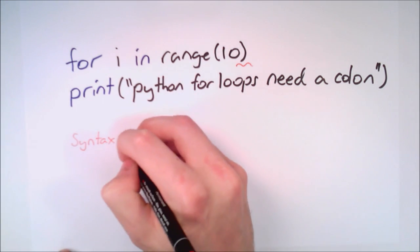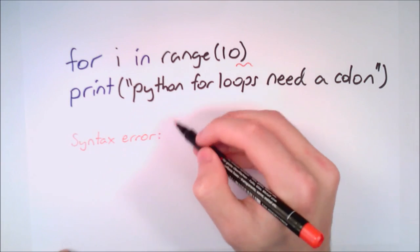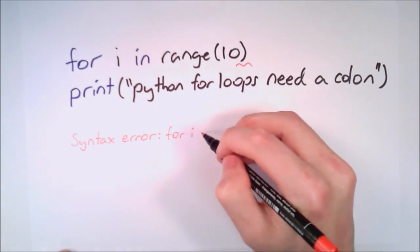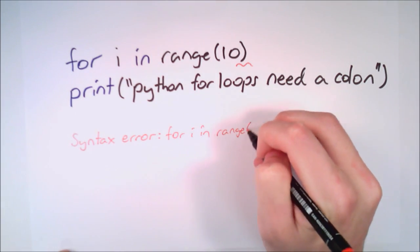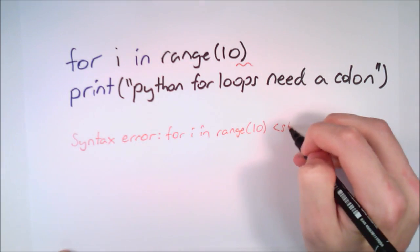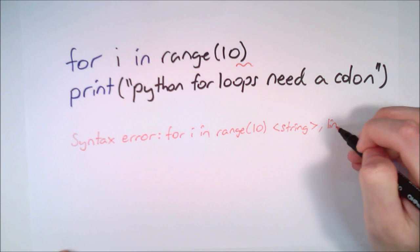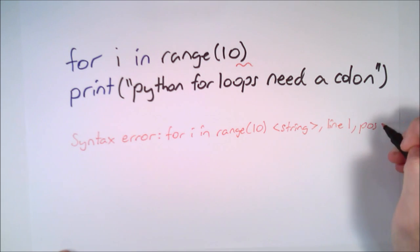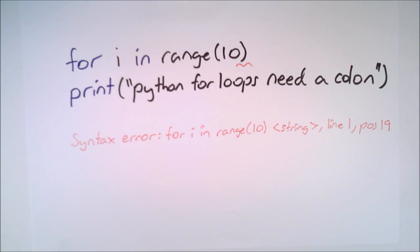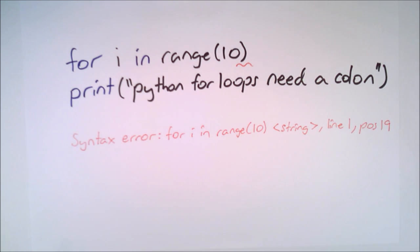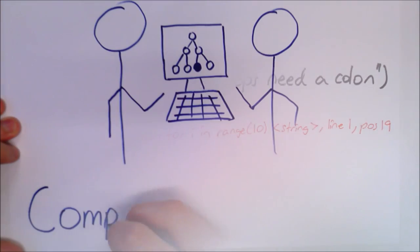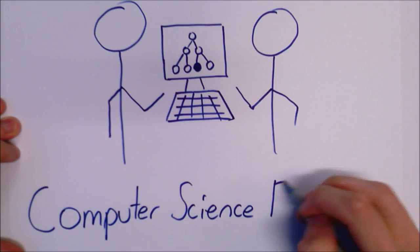Even before your computer runs your code or makes that calculation, it knows that you've made a mistake, and it can often tell you exactly where it is. We can use Finite State Automata to find some of these errors.